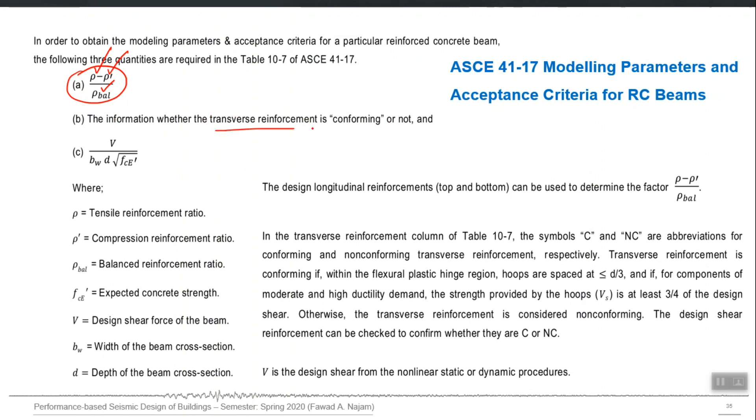Check whether your transverse reinforcement is conforming or not conforming. Conforming means that in the plastic hinge region, which means at the ends, your transverse steel is spaced at less than d by 3. This is the first condition of conforming. And second is that the strength provided by the shear reinforcement or steel Vs, because we know that the total shear capacity of beam is Vc plus Vs.